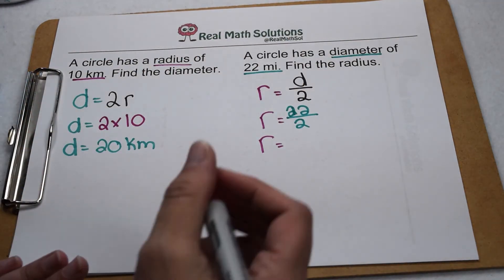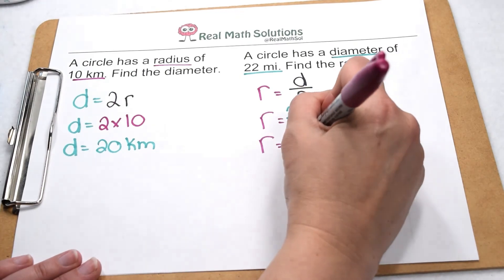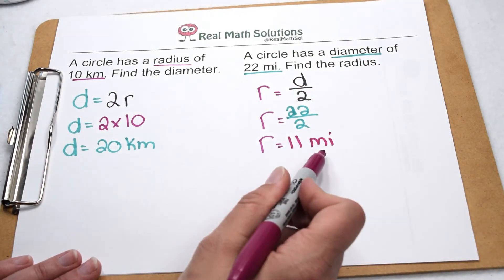When we do twenty-two divided by two, that comes out to be eleven. So this circle would have a radius of eleven miles.